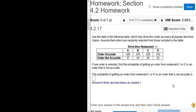In this problem, we have some results regarding a drive-thru restaurant. It says, if one order is selected, find the probability of getting an order from restaurant C or D or an order that is not accurate.